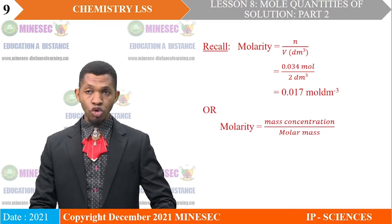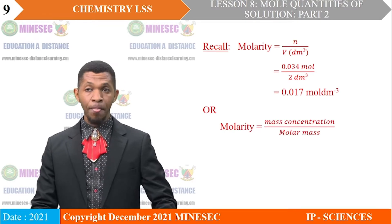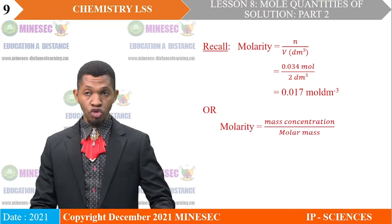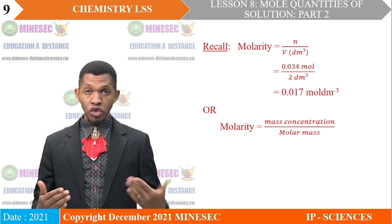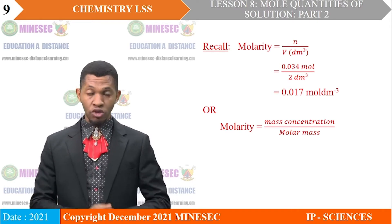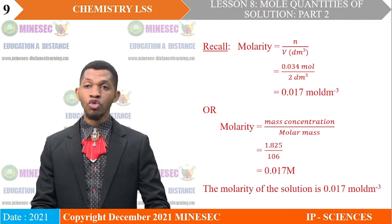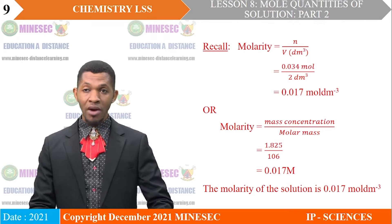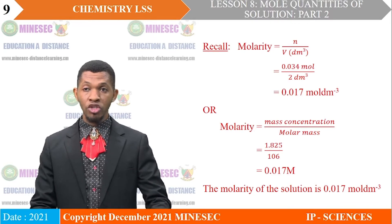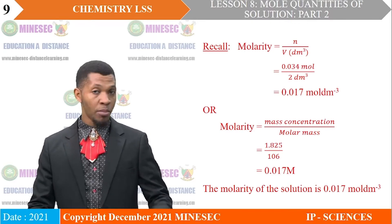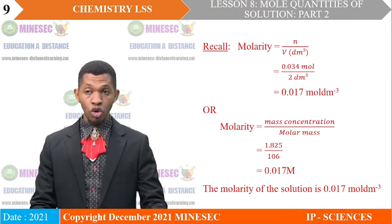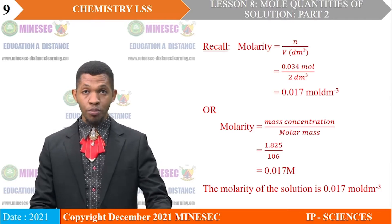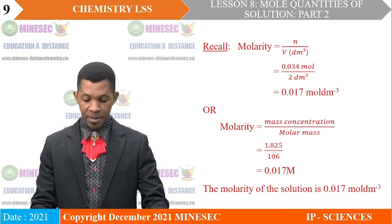Molarity can also be given by mass concentration divided by molar mass. Substituting mass concentration and molar mass with their values, we have molarity equal to 0.017 molar. The molarity of the solution is 0.017 moles per cubic decimeter.